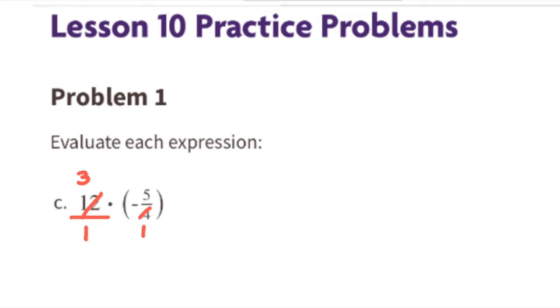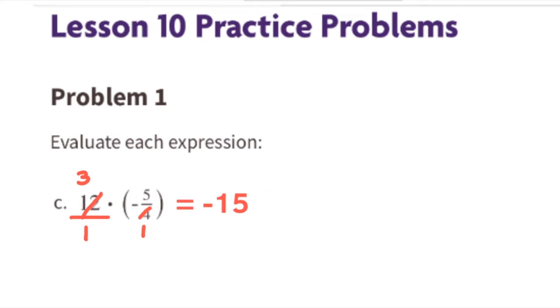Part C: 12 times negative five-fourths. We can cross-cancel — 4 divided by 4 is 1, and 12 divided by 4 is 3. We rewrite this expression as 3 times negative 5, and the value for this expression is negative 15.